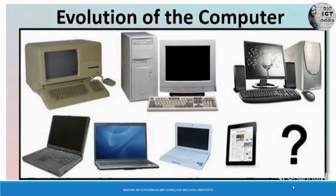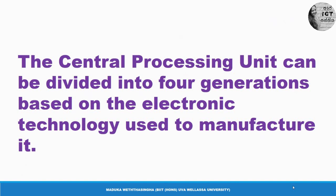You can see a question mark in the right side corner. It means that tomorrow or in the near future, we cannot predict the shape and how the computer will be — its shape and capacity we don't know. That's why we have put a question mark. This is the evolution of computers — how the computer changed from ancient times to today, and we are going to discuss how it changed based on the technology used to develop the central processing unit.